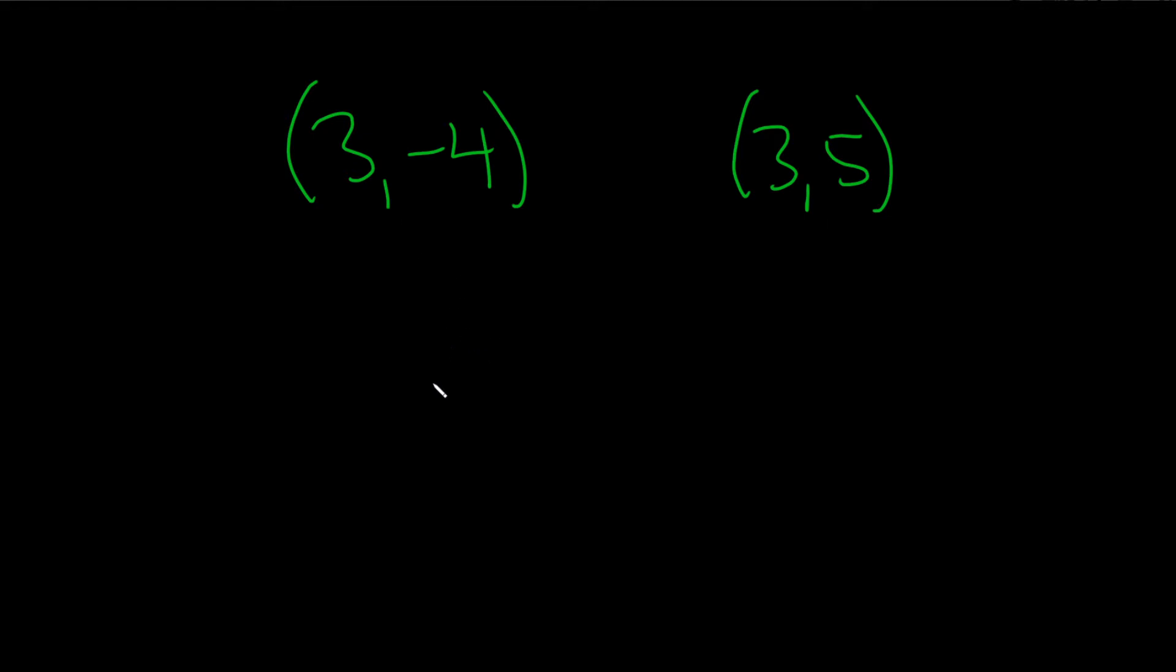So we'll start by writing down the formula for the slope of a line. It's m equals y2 minus y1 over x2 minus x1. This is the formula for the slope of a line.